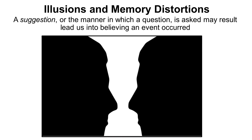Suggestion is the third category of memory distortion and involves how a question is asked. Can you see a vase in this picture? Well, yes I do. Because I asked you if you could see a vase, you likely missed the two faces looking at each other. Because I have primed you with a suggestion, it becomes difficult to see anything but what I have suggested.